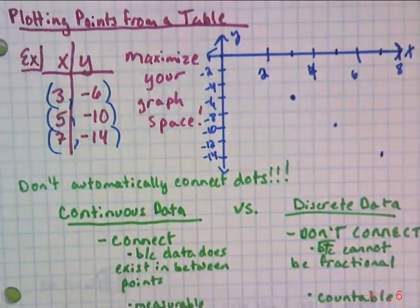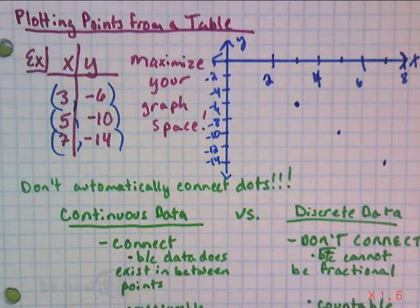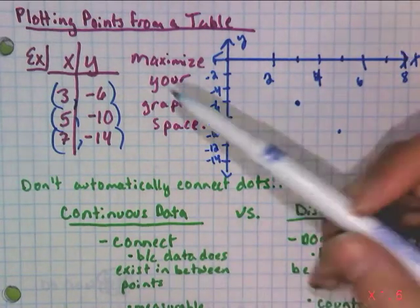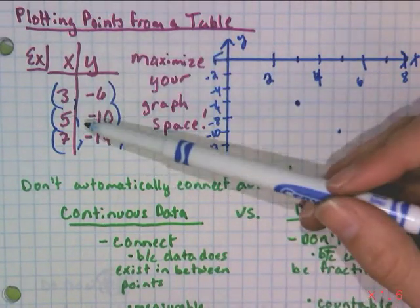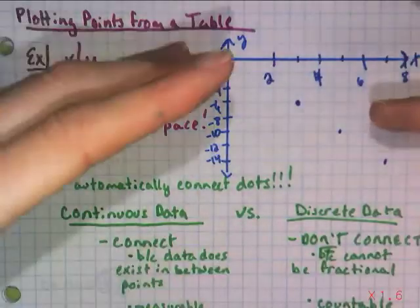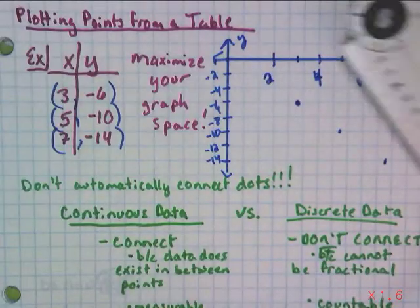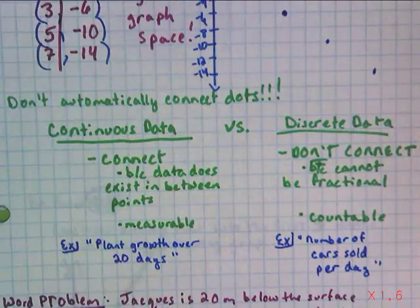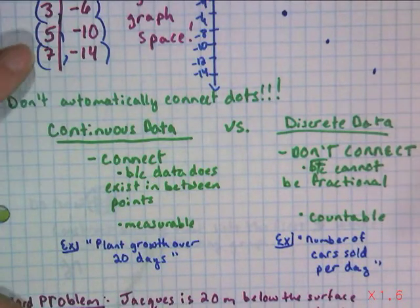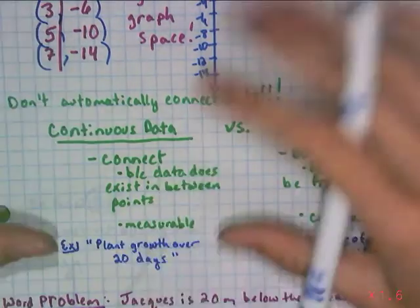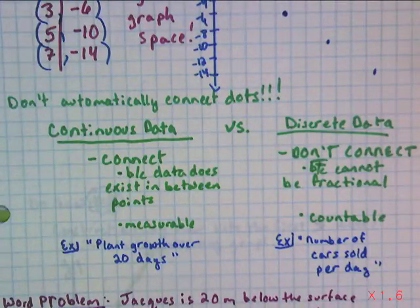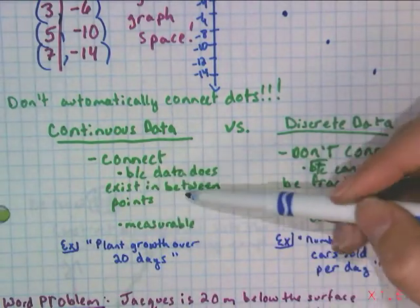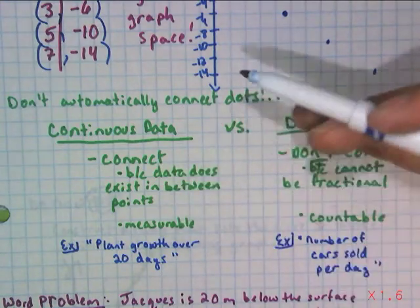And the next point that we come to is do we connect dots? Well, it depends on your situation. I could have given you x's any possible number. x could have been 3.5, 3.6, 3.7. So because I'm just dealing with random numbers and there's not really a context, we could connect it if you wanted to. But in a story problem, we only connect things if it is continuous data versus discrete data. We mean that there are points in between the ones we plotted.